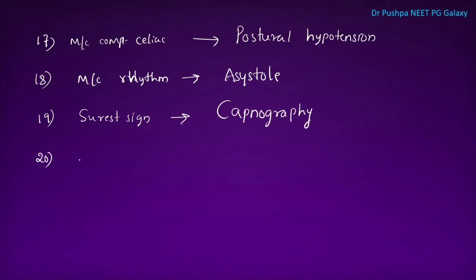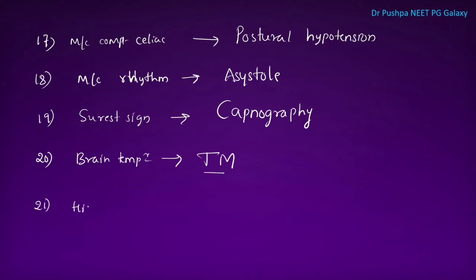We can accurately measure brain temperature at the tympanic membrane. The distal esophagus is the best site for core temperature. High quality CPR means chest compressions at 100 to 120 per minute, with rotation of the chest compressor every 2 minutes or earlier.